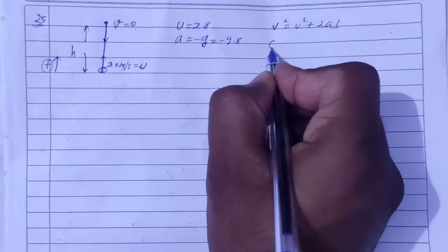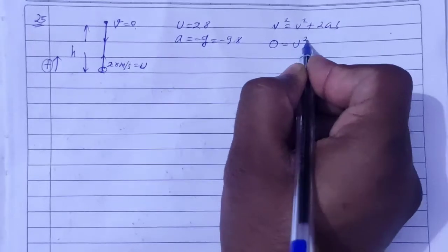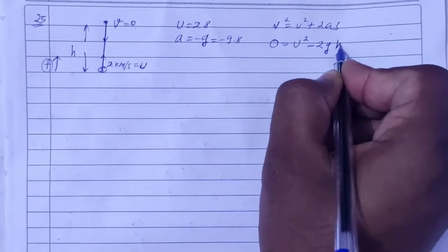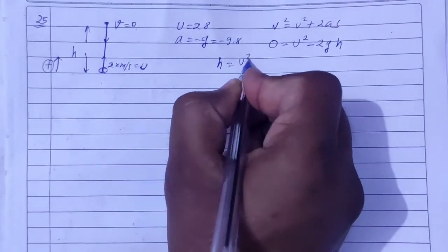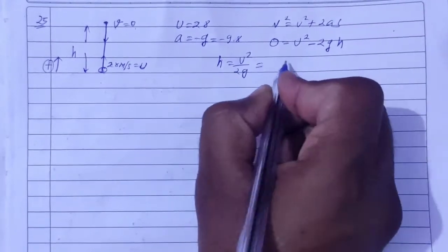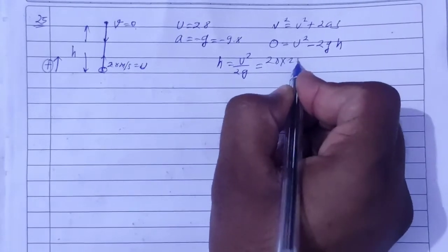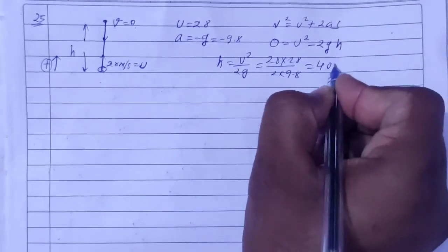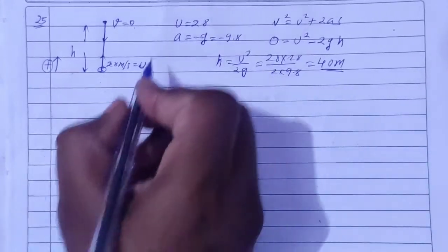v is the final speed, which is zero. So 0 = u² + 2(-g)h, which gives h = u²/2g. Putting values: u is 28, so h = 28×28 divided by 2×9.8. h comes out to be 40 meters. This completes part a.